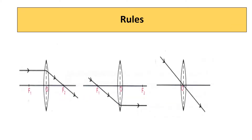You must know these rules to draw the ray diagrams. The first rule is that if the incident light ray is parallel to the principal axis, then after refraction it passes through the principal focus on the other side of the lens. The second rule relates to a ray directed toward the optical center. The third rule is that if the incident ray passes through the optical center, then the ray goes undeviated.